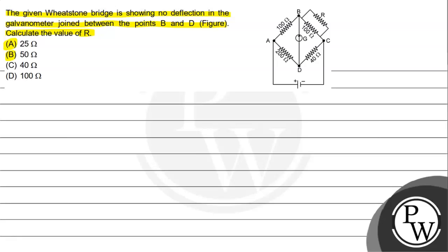The options are: (A) 25 Ω, (B) 50 Ω, (C) 40 Ω, (D) 100 Ω. About the Wheatstone network, we need to understand the important condition of its balancing point - the balancing condition, basically. So as a key concept, if we talk about Wheatstone network, whenever